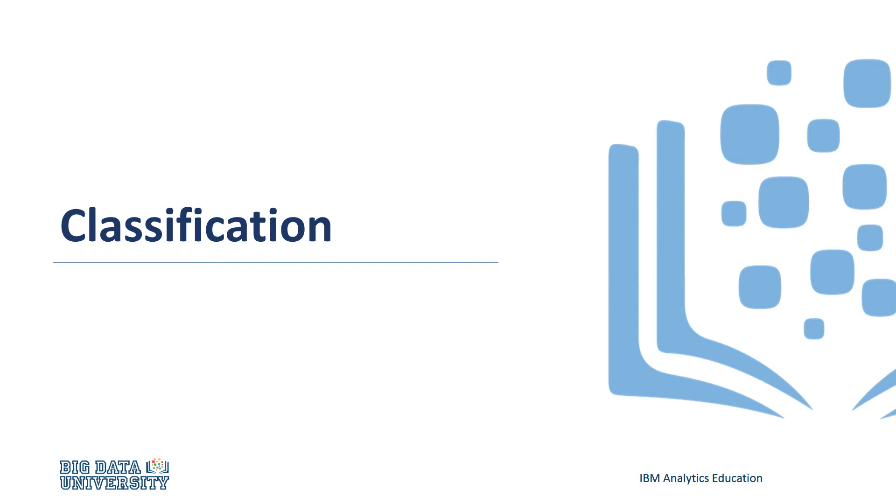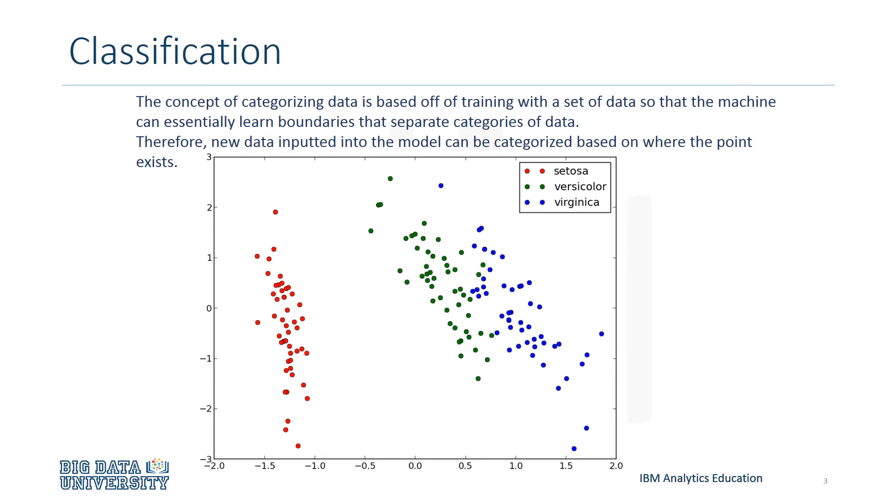Hello, in this video we'll be covering classification. The concept of categorizing data is based off of training with a set of data so that the machine can essentially learn boundaries that separate categories of data. Therefore, new data inputted into the model can be categorized based on where the point exists.